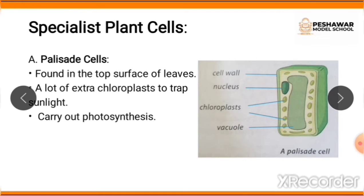Palisade cells contain a lot of extra chloroplast which helps in the trapping of sunlight. When plants trap sunlight, it helps them in the synthesis of their food. As mentioned earlier, chloroplast is a green color pigment, and this green pigment helps in the synthesis of food by the process of photosynthesis.